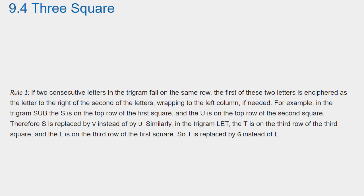Rule 1: If two consecutive letters in the trigram fall on the same row, the first of these two letters is enciphered as the letter to the right of the second of the letters, wrapping to the left column if needed. For example, in the trigram SUB, the S is on the top row of the first square and the U is on the top row of the second square. Therefore, S is replaced by V instead of by U.